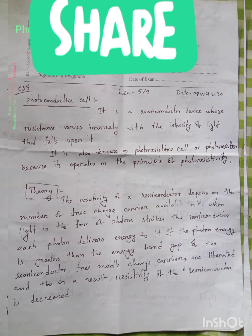And that means inversely - resistance varies inversely. That means conductivity is increased with the light intensity. It is also known as photoresistive cell or photoresistor, because it operates on the principle of photoresistivity.